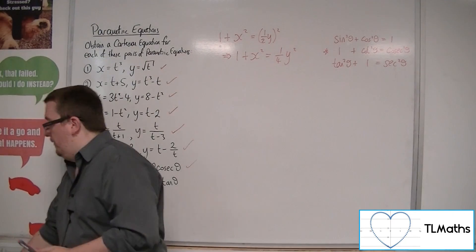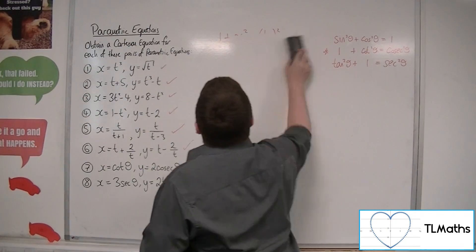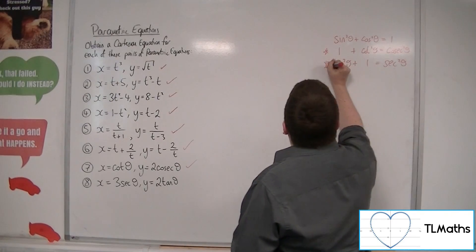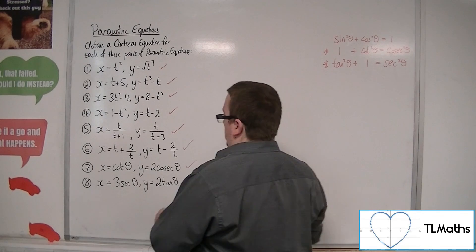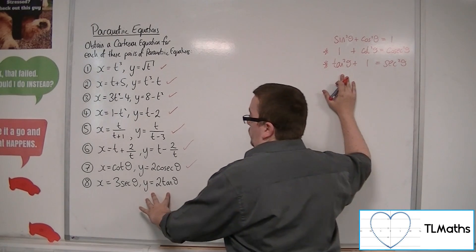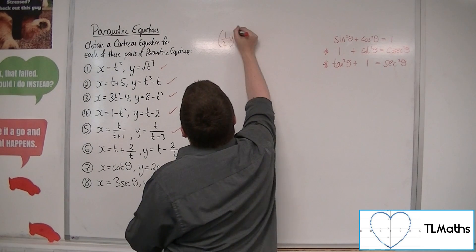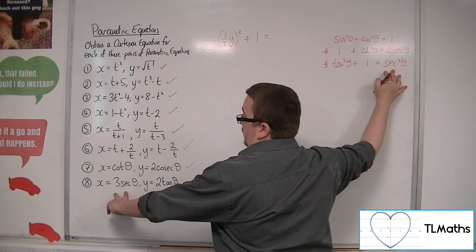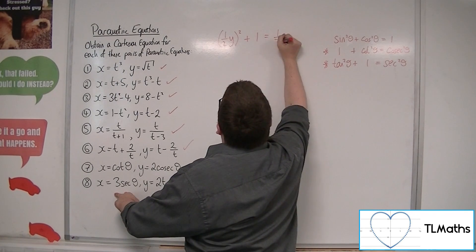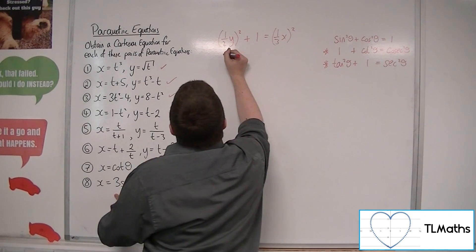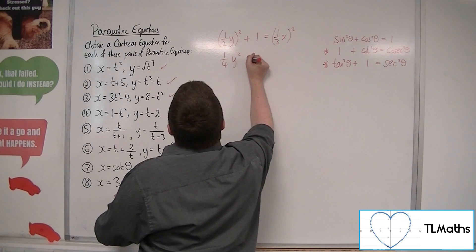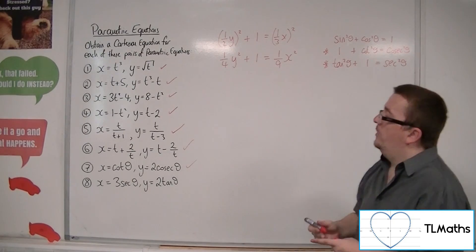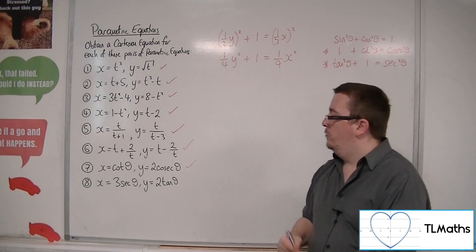And number 8 works in a very similar way. Because now you've got sec theta and tan theta. So, it works with that identity. So, tan squared, which is y over 2, so a half y squared, plus 1 is equal to sec squared, which is 1 third x. So, 1 third x squared. So, that would be a quarter y squared, plus 1 is equal to a ninth x squared. And there is your Cartesian equation for number 8.